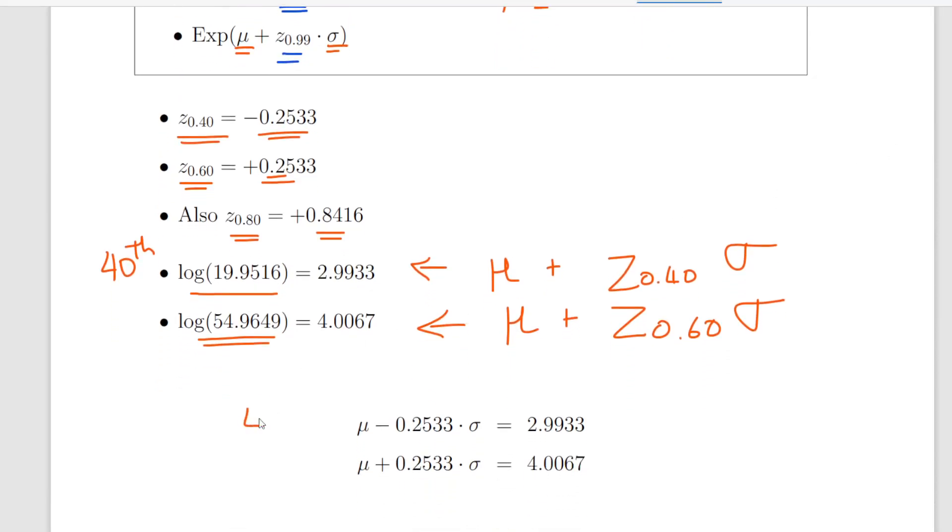So in the first instance, the 40th percentile, mu minus 0.2533. Remember this is the Z score for 40% or 0.40 is a negative number, is 2.9933. For the 60th percentile, mu plus 0.2533 times sigma is 4.0067.